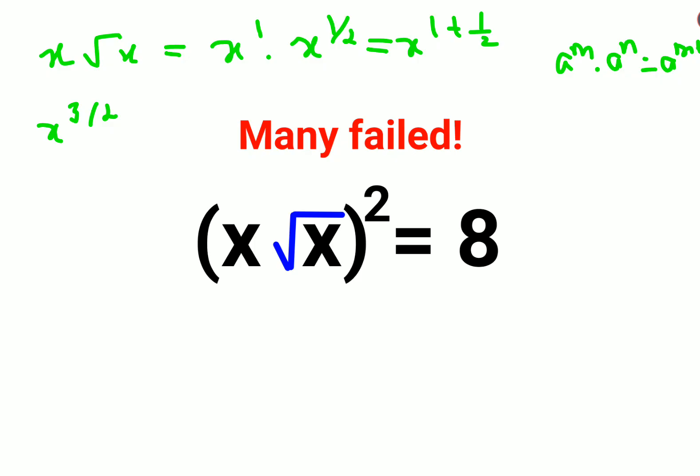So now what you can do is instead of x root x the whole squared, it can be written as x raised to 3/2 the whole squared.